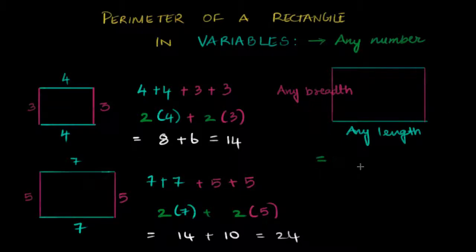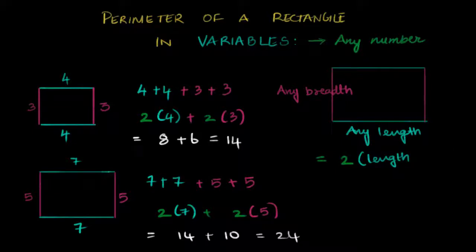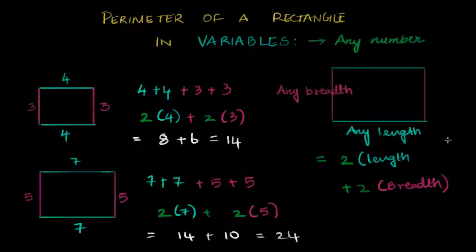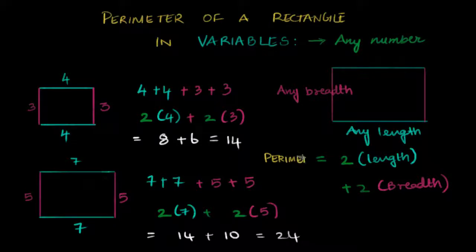So I know that my perimeter is going to be equal to two times the length, whatever length this is, plus two times the breadth. Now I look at this — this is equal to my perimeter. So I'm going to write perimeter — P-E-R-I-M-E-T-E-R.